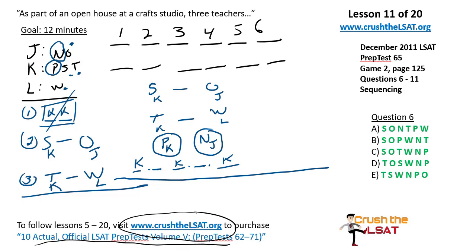Looking at the master sketch, slot six cannot be S or T. Also, O cannot be first, and W cannot be first. When you start attaching the K's together using these deductions, this game is actually easier than it may have initially looked. Let's take a look at the first question.